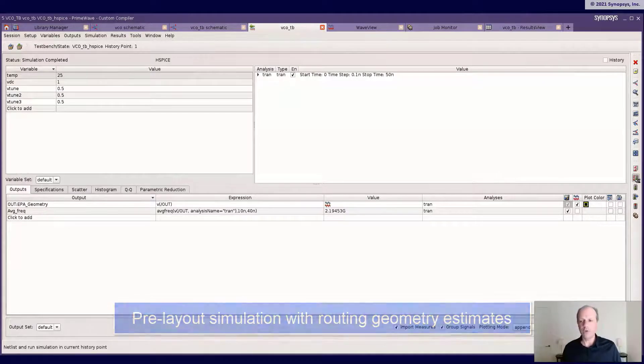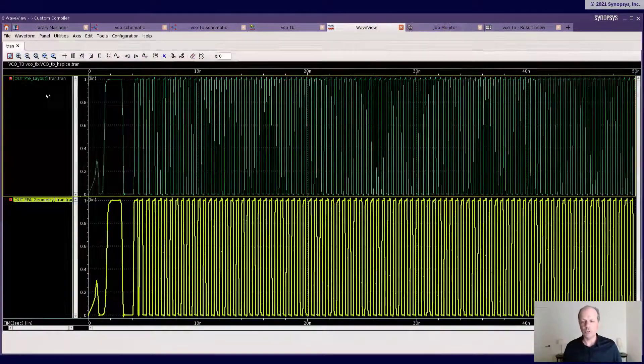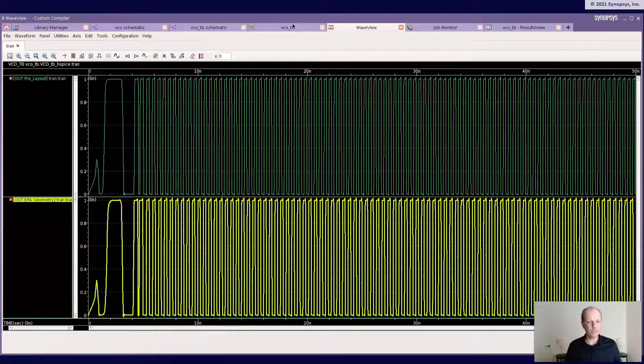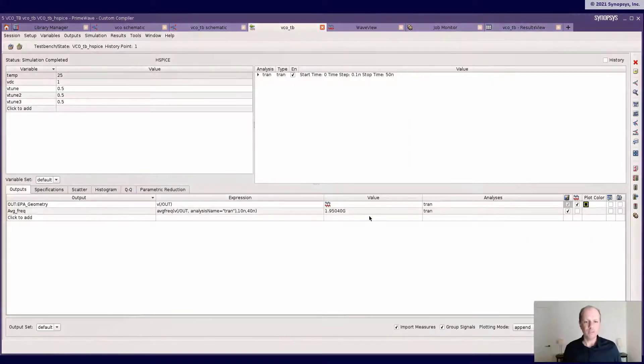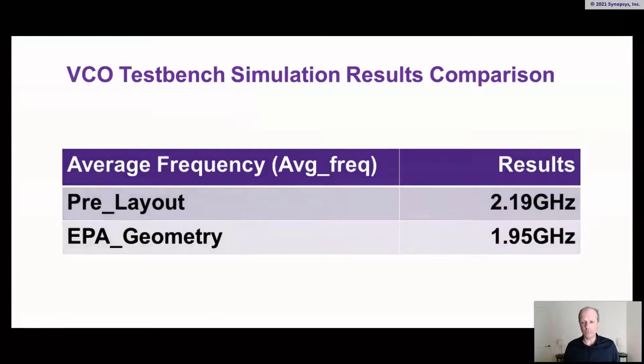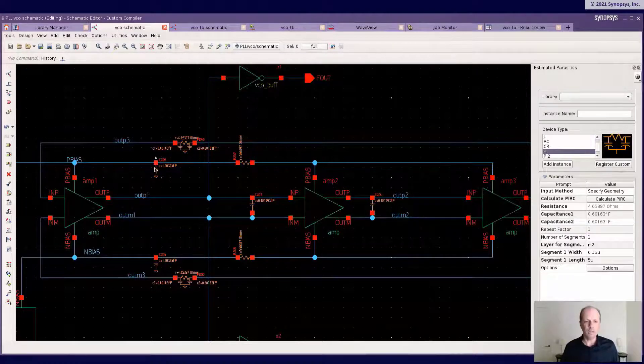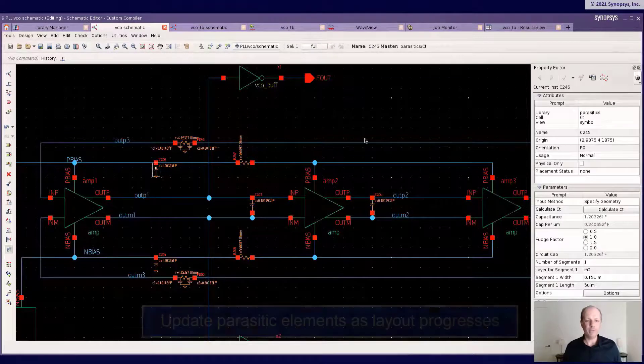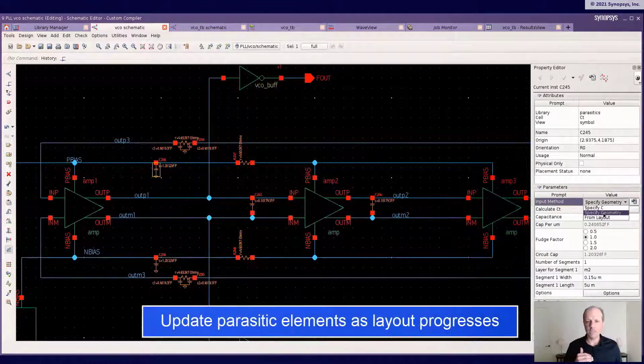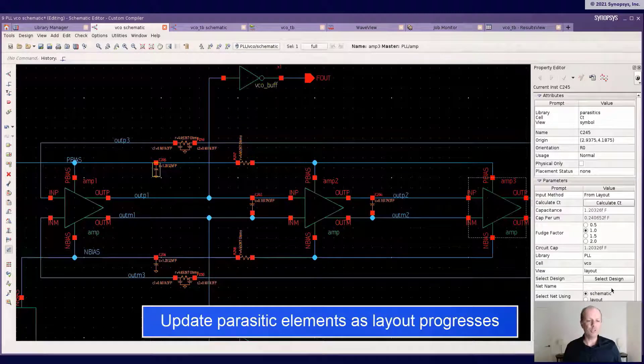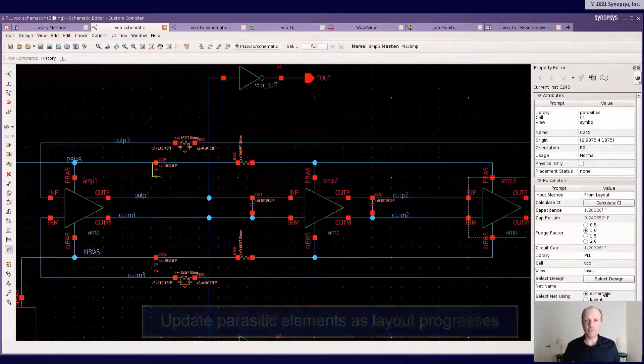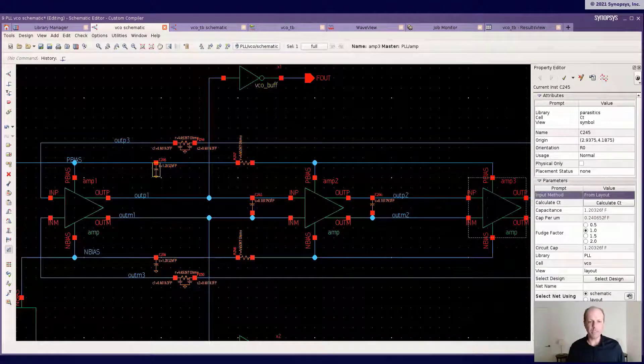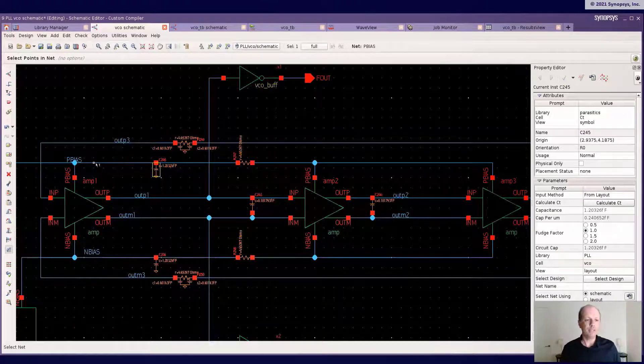So now I'll go ahead and perform the netlisting and simulation with the schematic that includes the estimates. And you'll see here the value of the frequency has evolved already. So it's 1.95 GHz. So right away, very quickly, you have the ability to see how your design behavior changes.